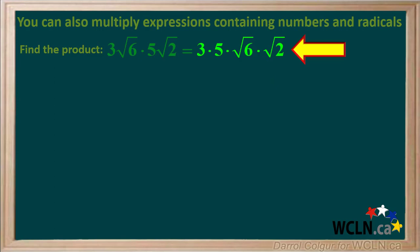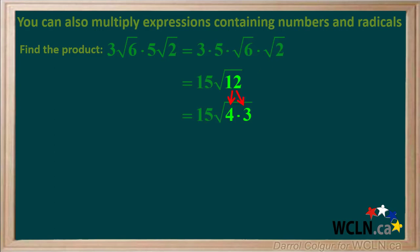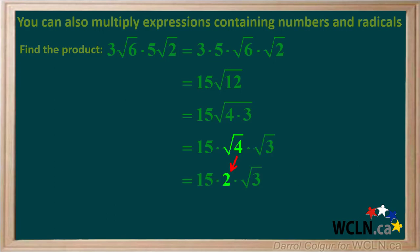So we have the expression 3 times 5 times root 6 times root 2. 3 times 5 is 15 and root 6 times root 2 is root 12. But 12 can be factored to 4 times 3, and the square root of 4 times 3 can be broken down to the square root of 4 times the square root of 3. The square root of 4 is 2, and 15 times 2 equals 30, so the final answer is 30 root 3.